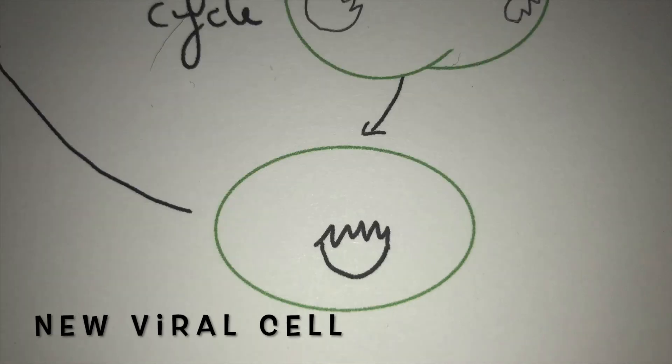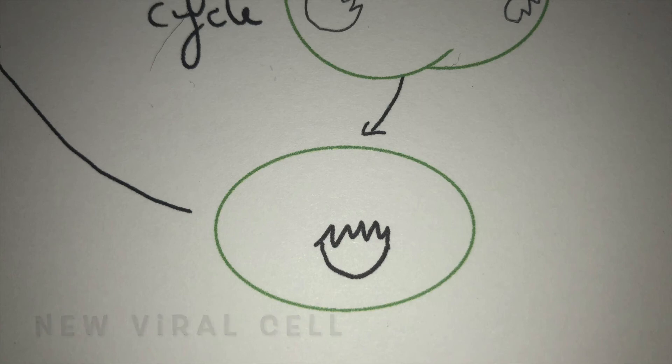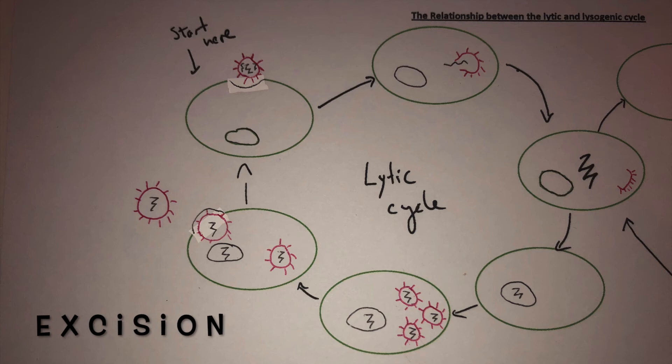The result of this process is a new viral cell that repeats this process while hiding from immune cells in plain sight. There is also an extra step called excision. This is when the virus is under stressful conditions and the viral genome will undergo excision and enter the lytic cycle.